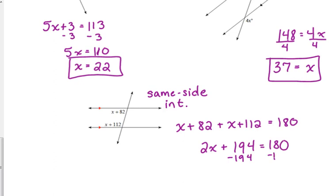So, we subtract 194. 2x is equal to negative 14. So, divide by 2. x is equal to negative 7.